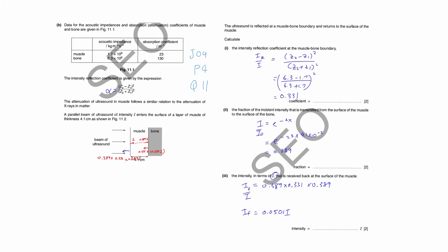The fraction of the incident intensity that is transmitted from the surface of the muscle to the surface of the bone: the surface of the muscle is here, the surface of the bone is here. So basically, what they're asking is the fraction of the incident intensity that will pass through — that will be absorbed by muscle. If it is absorbed by muscle, you use the formula: I/I₀ = e^(−kx). Since it is passing through muscle, use the absorption coefficient for muscle: e^(−23). The muscle thickness is in centimeters, so don't forget to change it to meters.